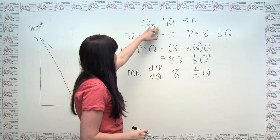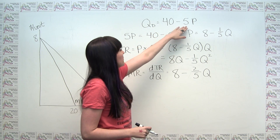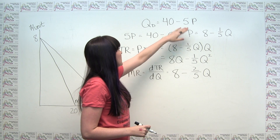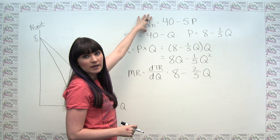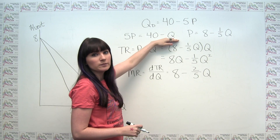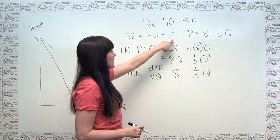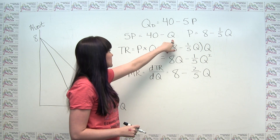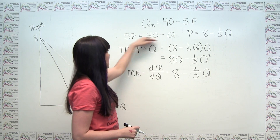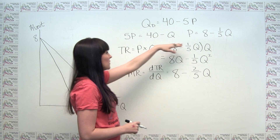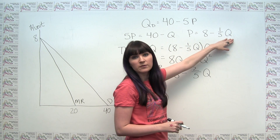If we add 5P to both sides and subtract Q from both sides, we get 5P is equal to 40 minus Q. Then to get P by itself, we divide both sides by 5, and we get P is equal to 8 minus one-fifth Q.